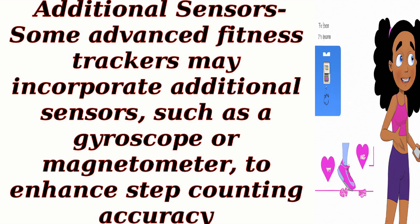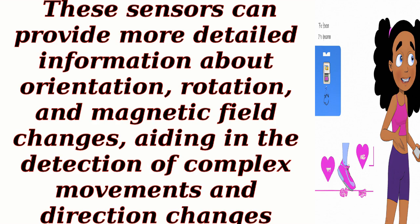Additional Sensors. Some advanced fitness trackers may incorporate additional sensors, such as a gyroscope or magnetometer, to enhance step counting accuracy. These sensors can provide more detailed information about orientation, rotation, and magnetic field changes, aiding in the detection of complex movements and direction changes.